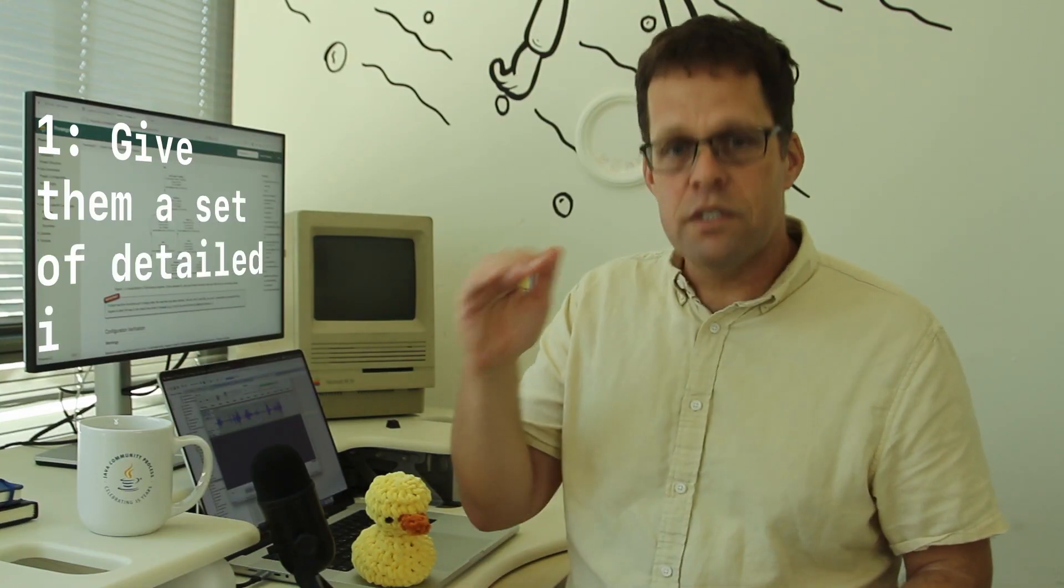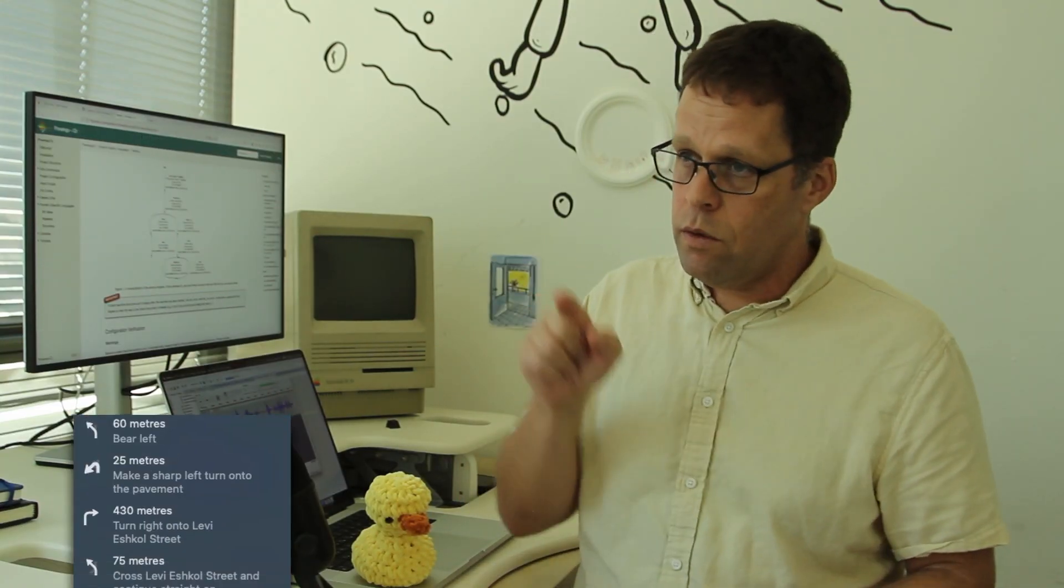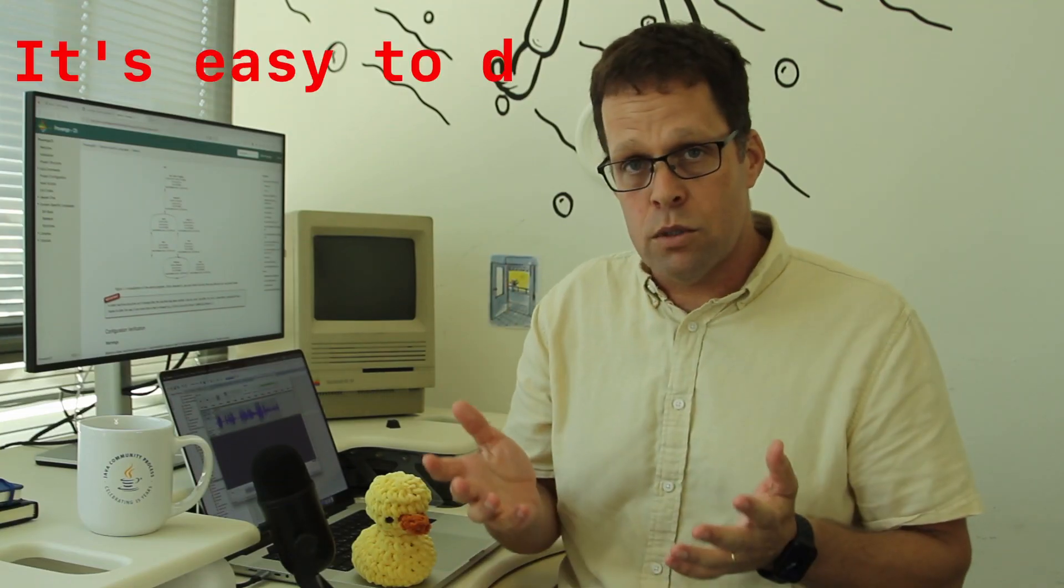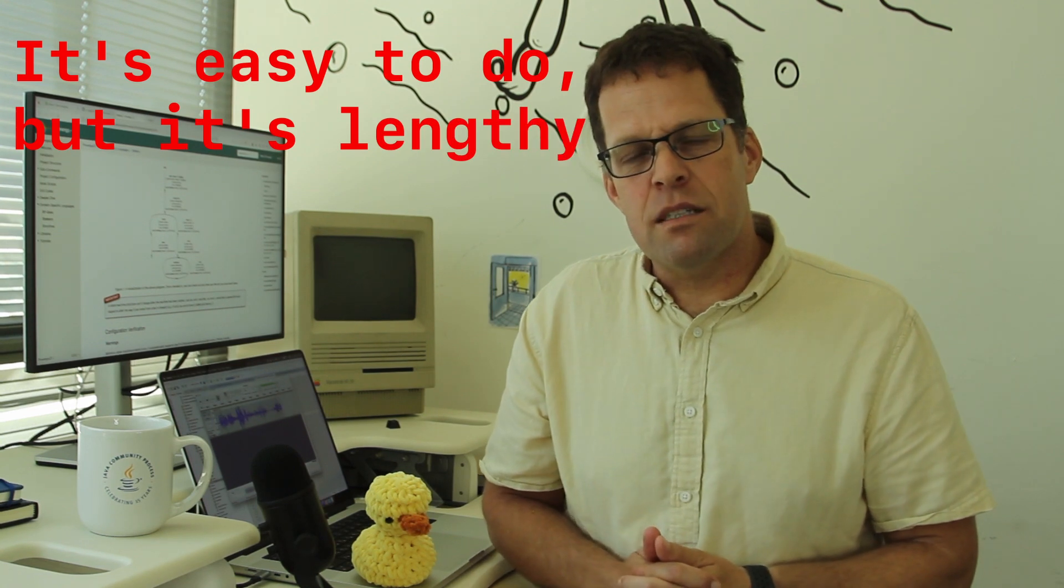One, you just give them a set of detailed instructions. You go all the way to the tree over there, turn left, go across the bridge, over the fountain, blah, blah, blah. There's a very long, detailed description of what they need to do. It's easy to do, but it's very lengthy and a bit tedious. The other option is you give them a map.